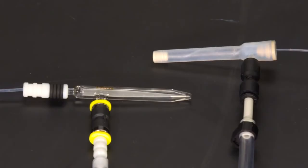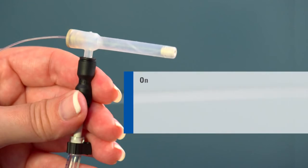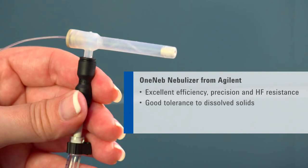Your choice of nebulizer will also affect performance. The Agilent One Neb is great for most samples with excellent efficiency, precision and HF resistance. Constructed of PEEK and PFA, the One Neb is virtually unbreakable and is resistant to hydrofluoric acid and organic solvents. Also, there is less blockage from samples with high total dissolved solids.